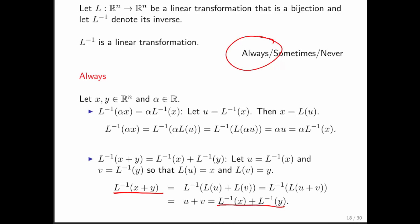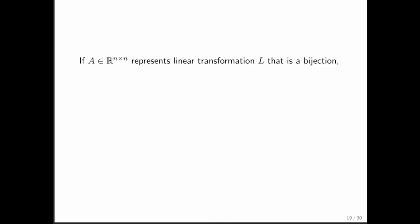And therefore, we know that the inverse of a linear transformation is itself a linear transformation. Now, why is that important? Well, the instant we know that L inverse is a linear transformation, then we know that if it exists, a matrix that represents it exists. So we know that there's some matrix, and let's call that matrix A inverse, the inverse of matrix A.